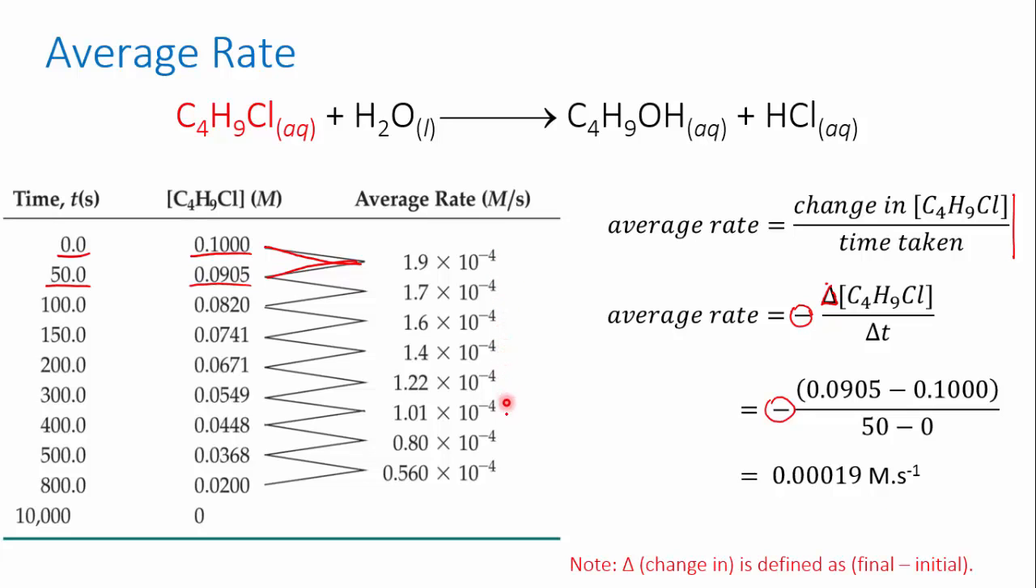Looking at the rate as the reaction proceeds, you can see that the average rate decreases as we go along. This is what the graph showed us as well. We looked at the factors that affect reaction rate in the last video. One of them was concentration. As the reaction proceeds, the concentration of the reactant decreases because it's being used up. That means that the rate of the overall reaction is decreasing as well.